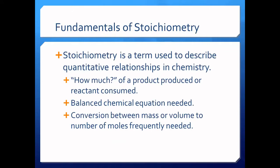Stoichiometry is a term used to describe quantitative relationships in chemistry — how much of a product is produced or how much reactant is consumed, given a balanced chemical reaction. At times the reaction is not yet balanced and you will be required to balance it. Without the stoichiometric relationship extracted from a balanced chemical equation, no amounts could be quantified.